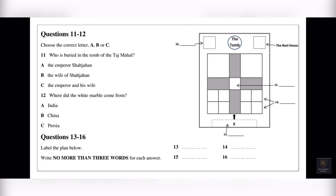On either side of the tomb, there are buildings made of red sandstone. The one to the west, to the left on our plan, is a mosque. It faces towards Mecca and is used for prayer. On the east side of the Taj is a building known as the Rest House. It's like the twin of the mosque, but because it faces away from Mecca, it was never used for prayer.